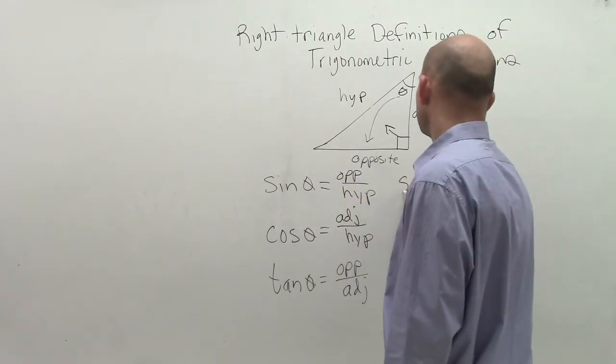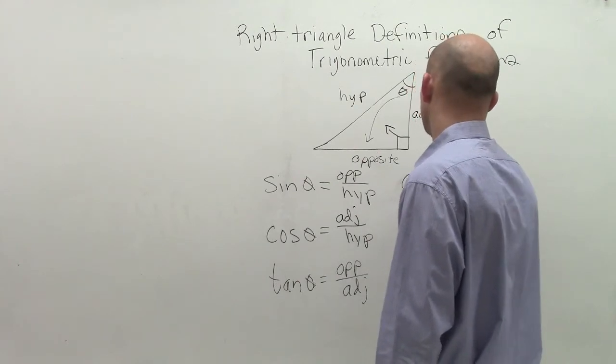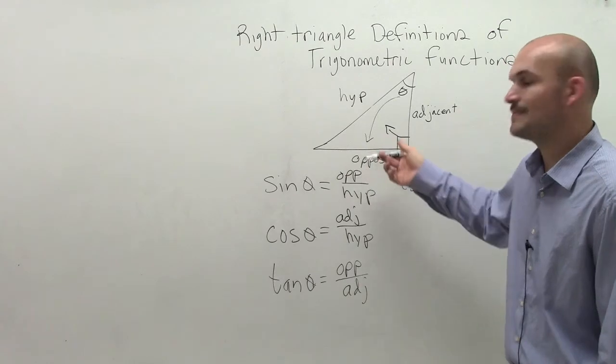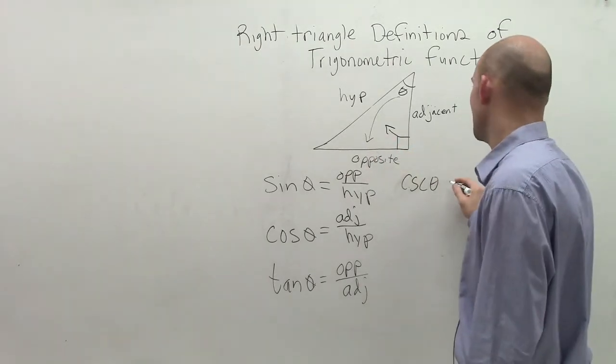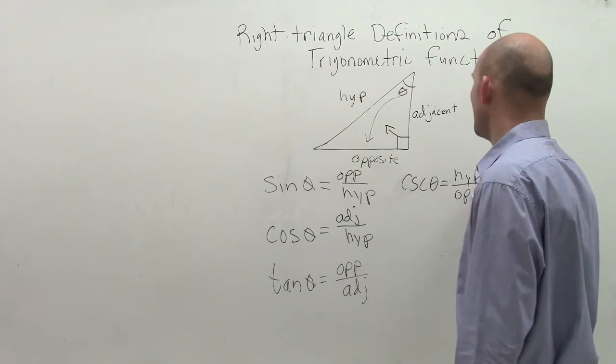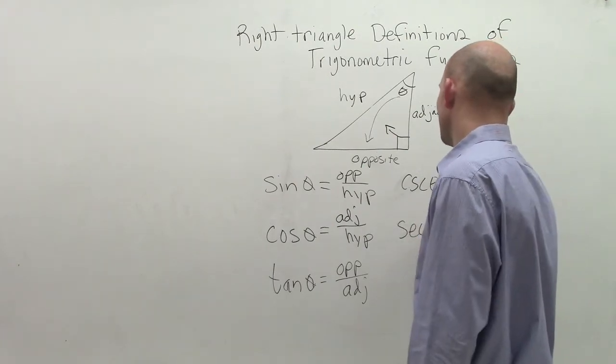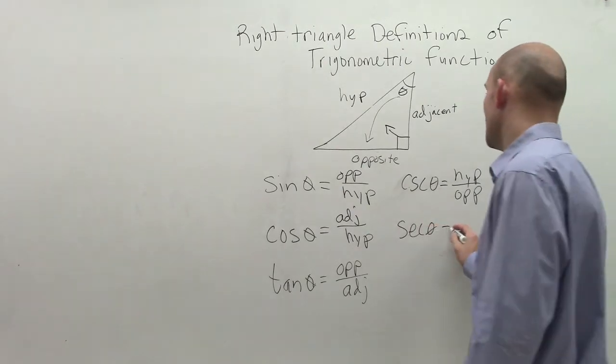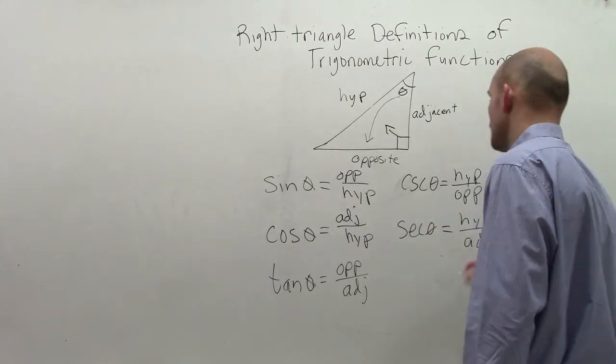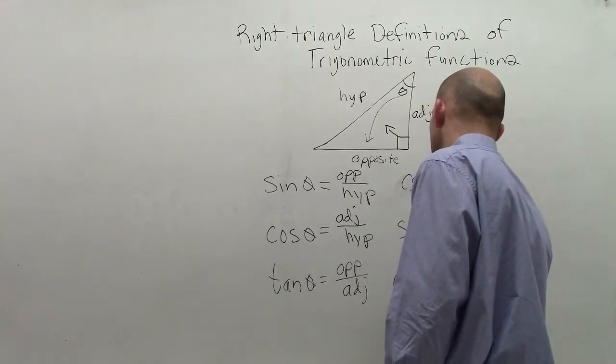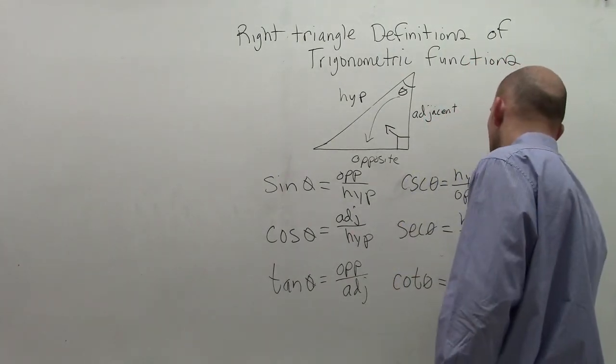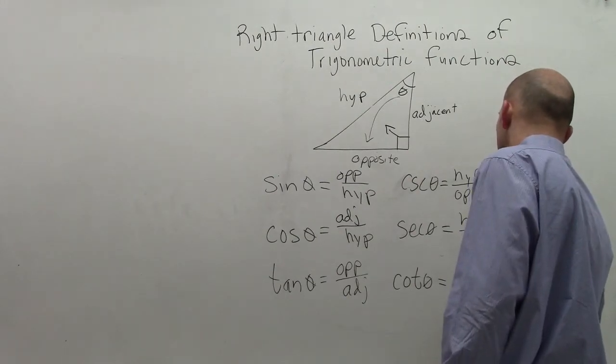The first one is cosecant of theta, and that's going to be the reciprocal of sine. So if sine is opposite over hypotenuse, the cosecant of theta is equal to the hypotenuse over opposite. The secant function is the reciprocal of cosine, and that's equal to the hypotenuse over adjacent. And the cotangent function is the reciprocal of tangent, which is equal to adjacent over opposite.